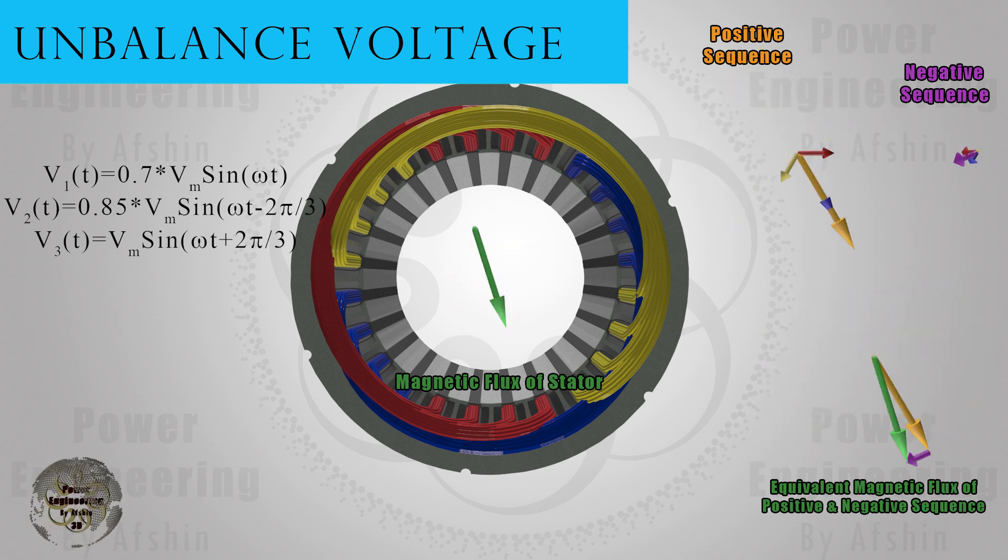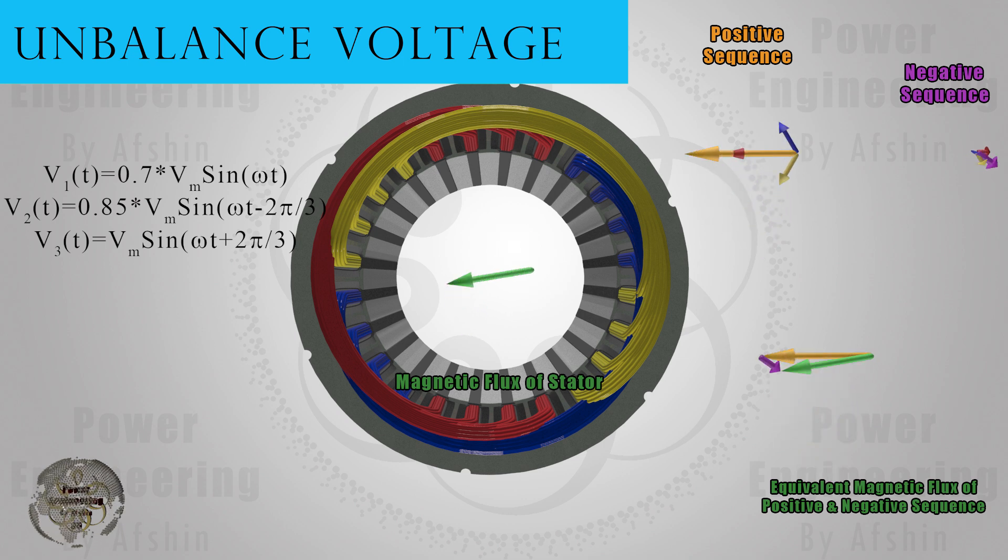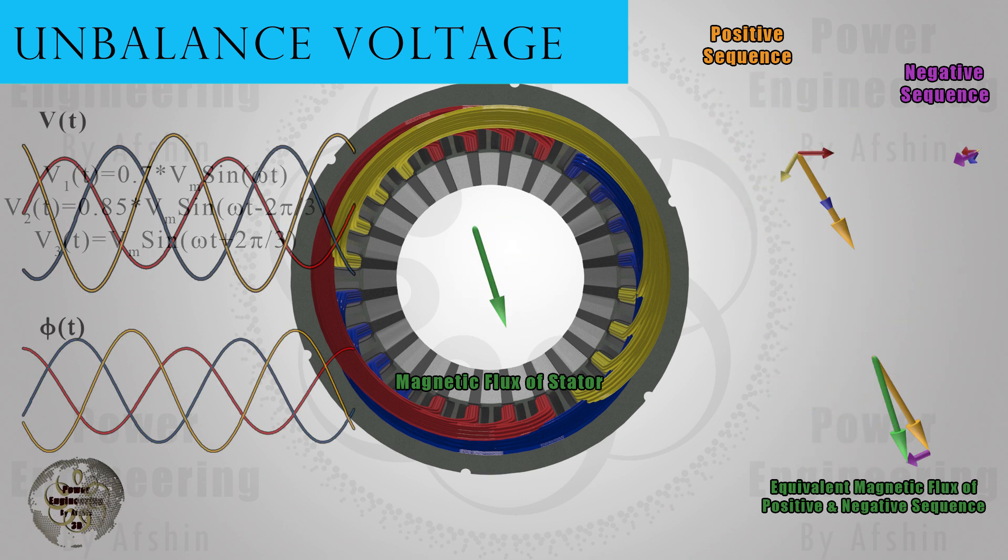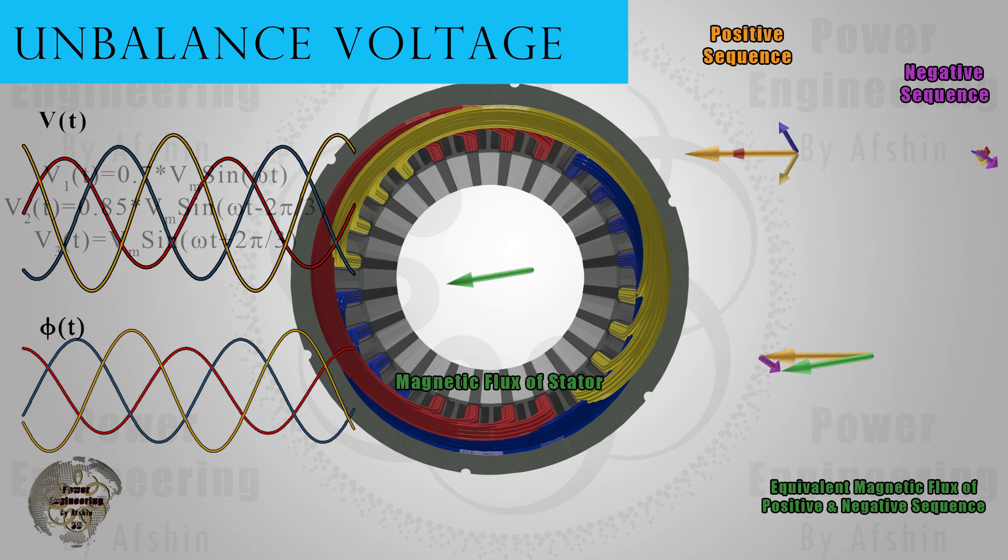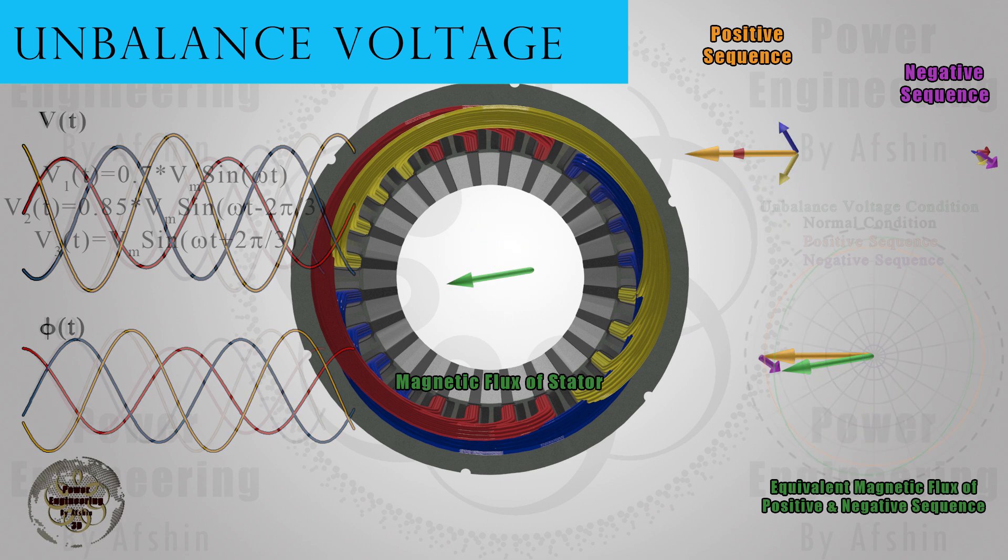As you can see on the left side, the voltage of the first phase has decreased by 30 percent, and the voltage of the second phase has decreased by 15 percent. With this voltage, the field inside the motor's surface is not uniform, and it changes based on the location of each phase winding. As observed, the field has taken an elliptical shape.